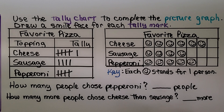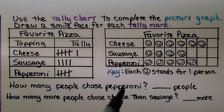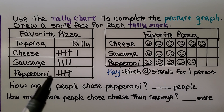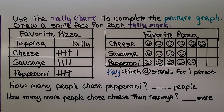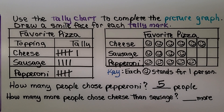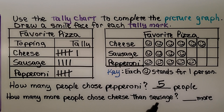Now we can answer the questions. How many people chose pepperoni? We can look at the tally chart or the picture graph. If you said five, you're correct — five people chose pepperoni. The next question says: how many more people chose cheese than sausage?